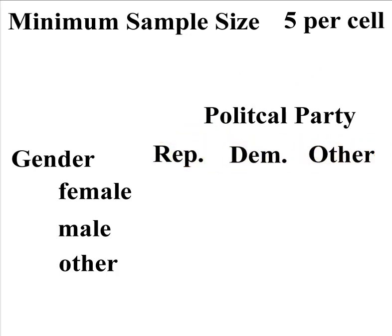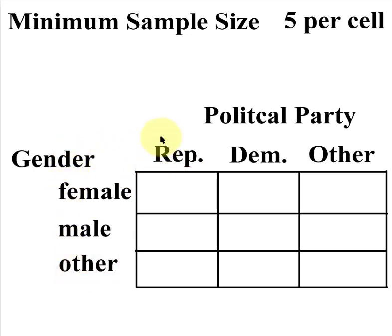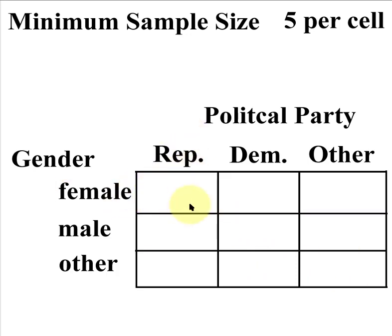What you do is draw a box — a matrix, a table — that separates everybody into one level of gender and one level of political party. So this box would be female Republicans, the middle box here would be male Democrats, and this would be other/others. These are the cells.